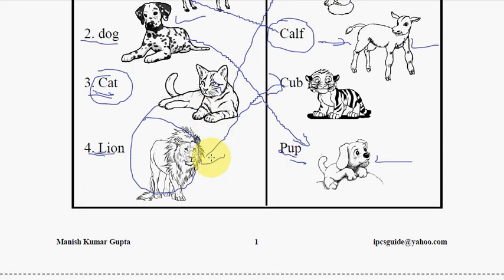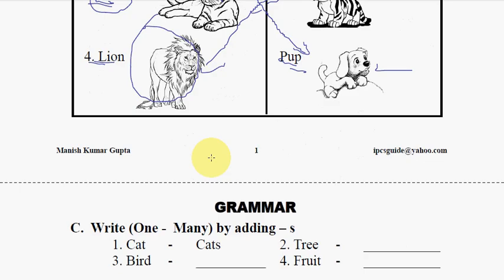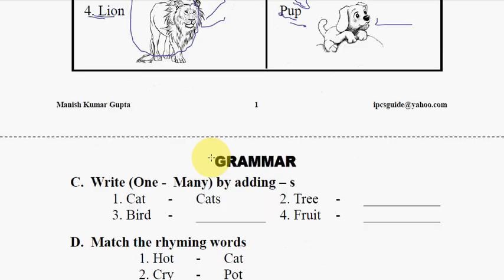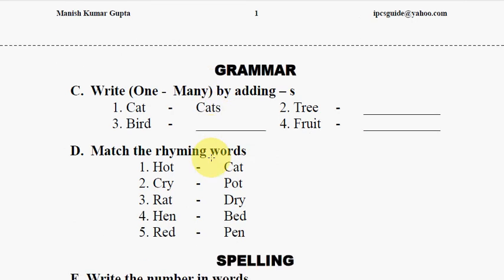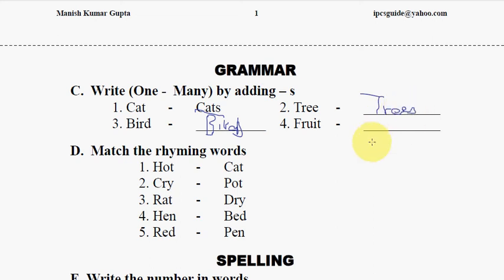Whether the student belongs to great achievers or low achievers, the fourth section is the grammar section. For example: cat becomes cats, so the student will write bird becomes birds, tree becomes trees, and fruit becomes fruits.